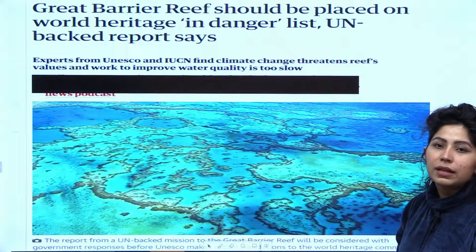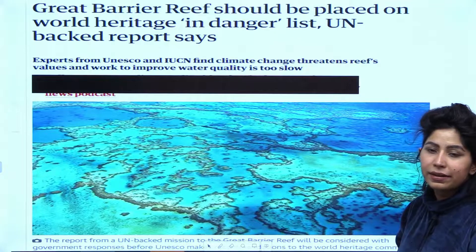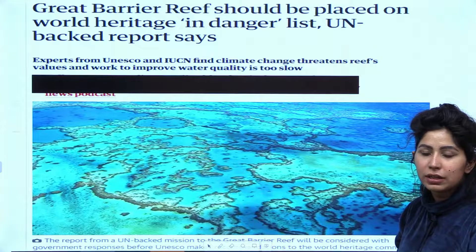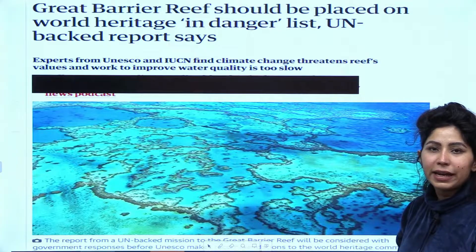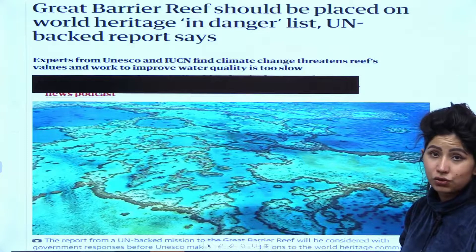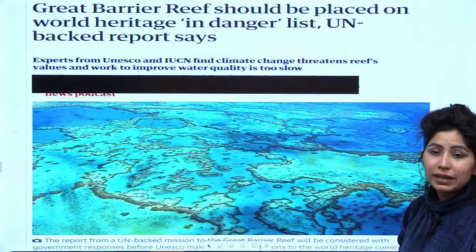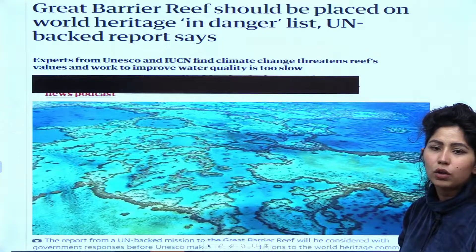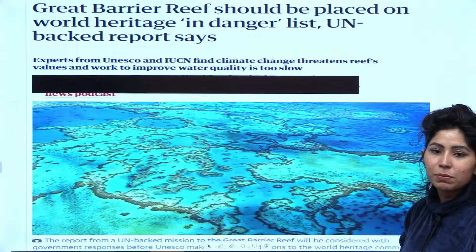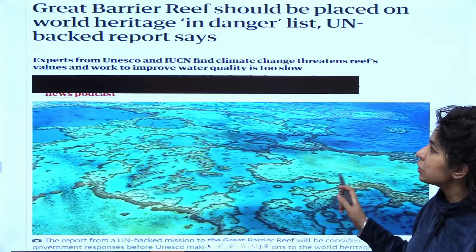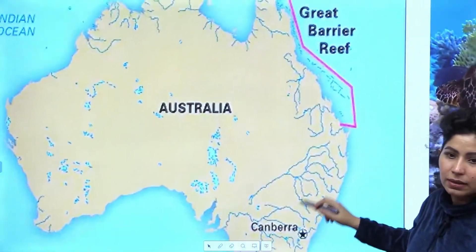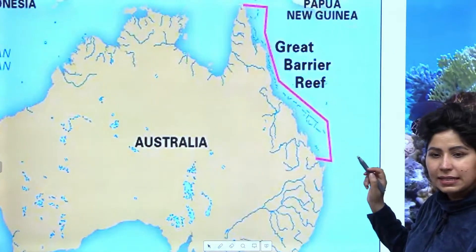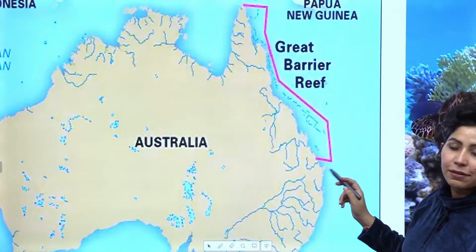The first topic for today is regarding the Great Barrier Reef. A UN-backed report says that the Great Barrier Reef should be placed on the World Heritage in Danger list. The Great Barrier Reef is off the coast of Queensland in Australia. It is already part of the UN list of World Heritage, but they say it should now be placed under World Heritage in Danger. As you can see on the map, this is Australia's eastern coast, and the Great Barrier Reef is located there.